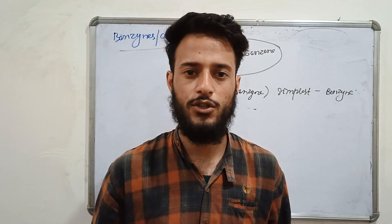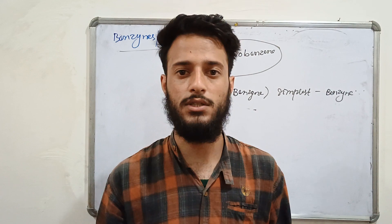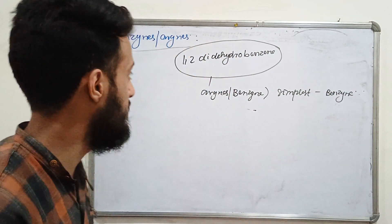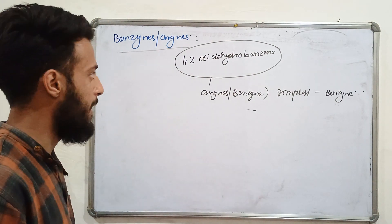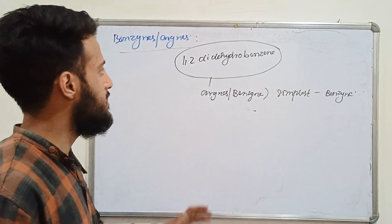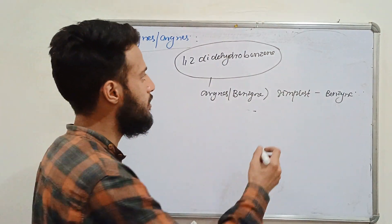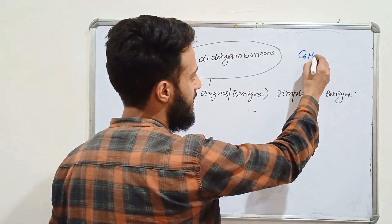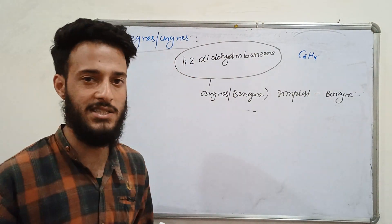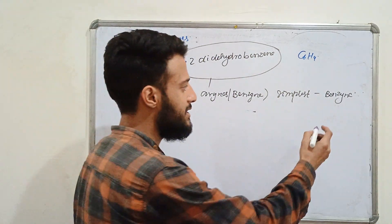This is the sixth lecture on reaction intermediates. In this lecture we are going to discuss another type of reaction intermediate — the benzyne, which we simply call arines. Benzynes or arines are basically the derivatives of 1,2-didehydrobenzene, and the simplest derivative among them is the benzyne.